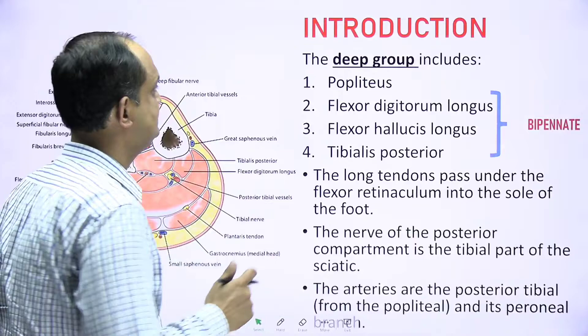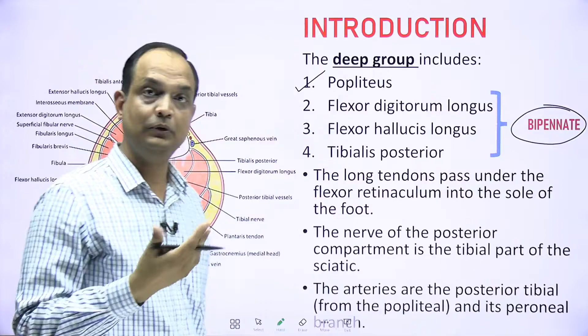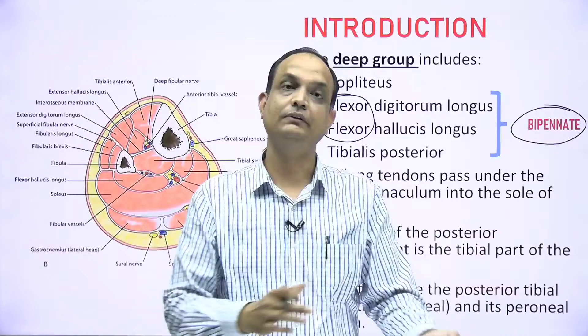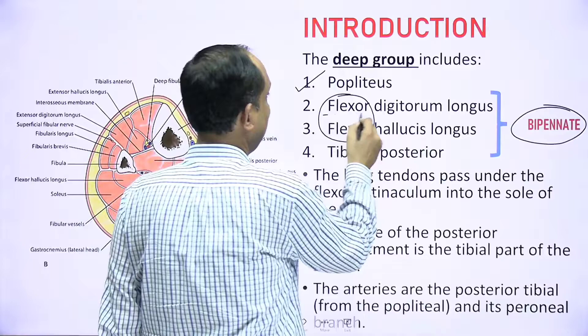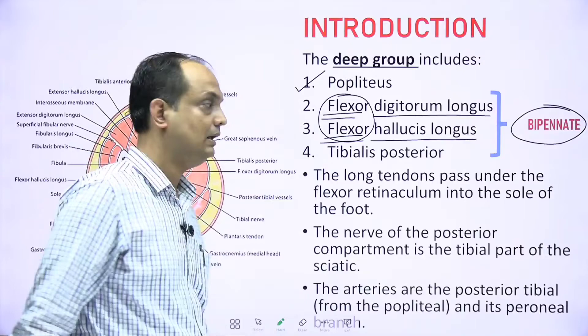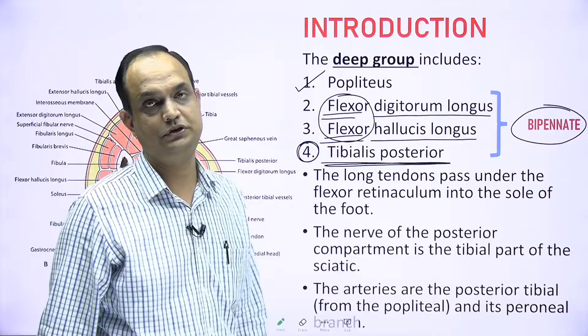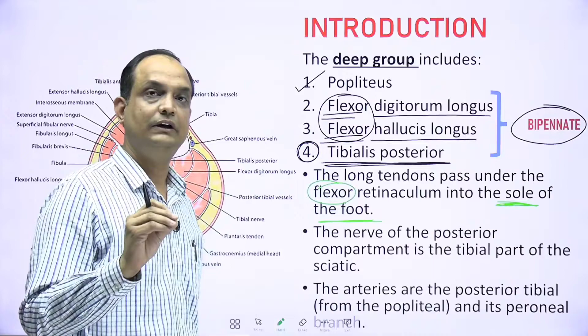The deep group of muscles consists of popliteus and three bipinnate muscles. Keep in mind that in the forearm, flexors are in the anterior compartment, but in the leg the flexors are in the posterior compartment. The deep group includes flexor digitorum longus, flexor hallucis longus, and tibialis posterior. The long tendons of these muscles pass under the flexor retinaculum and enter the sole of the foot.